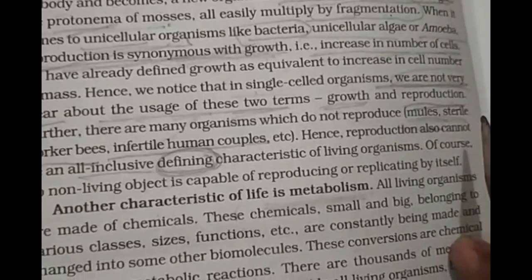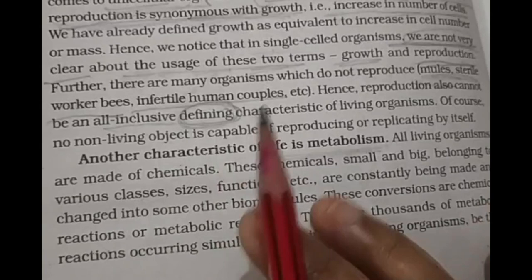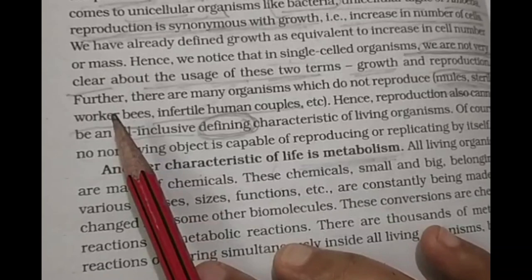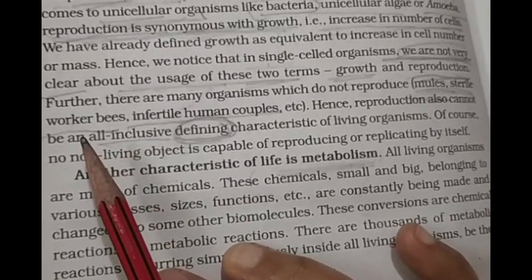Furthermore, there are many organisms that do not reproduce — that is mule, sterile worker bees, and infertile human couples. In the honey bee family structure, there are queens, drones, and worker bees. The worker bees are infertile — they cannot reproduce. Only the queen can reproduce. So reproduction cannot be an all-inclusive defining characteristic of all living organisms.